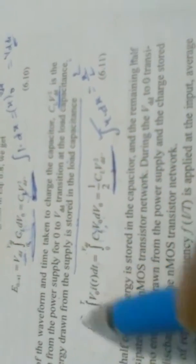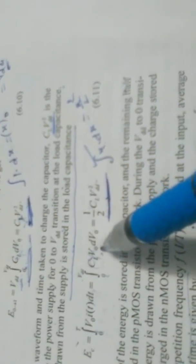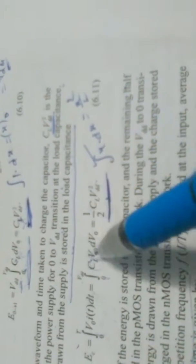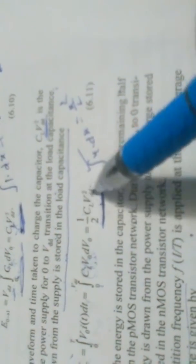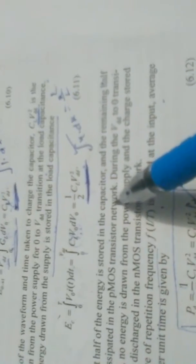Regardless of the waveform, CL·VDD² is the energy drawn from the power supply during the zero-to-VDD transition. Part of the energy drawn from the supply is stored in the load capacitance. Integrating CL·V_out·dV_out from zero to VDD gives CL·VDD²/2, meaning half of the energy is stored in the capacitor and the remaining half is dissipated in the PMOS network.